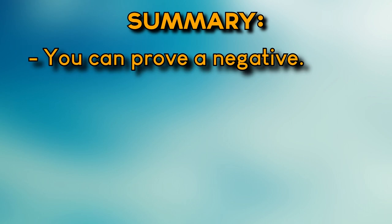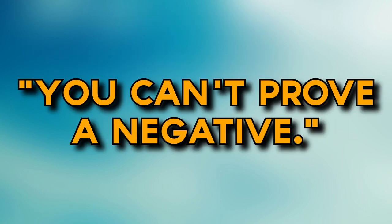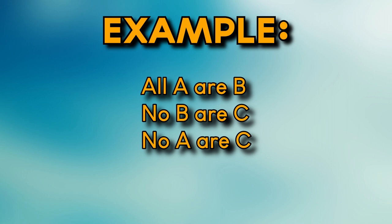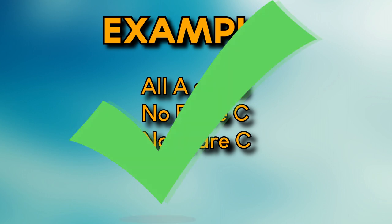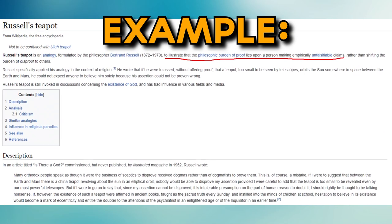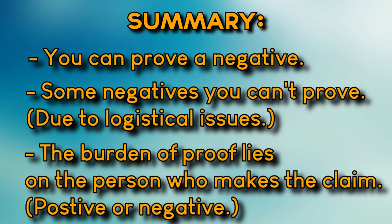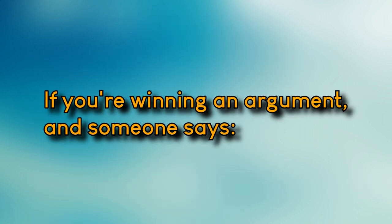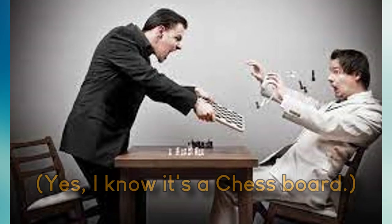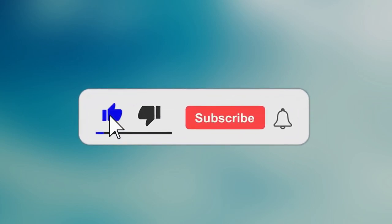In summary: you can prove a negative. The general use of this phrase out of context is just false — you can 100% prove a negative. Quick example: All A are B, no B are C, therefore no A are C — you've proved a negative deductively. Some negatives you cannot prove due to logistical issues, i.e. Russell's teapot and the uncertainty of inductive conclusions. The burden of proof lies on the person making the claim, positive or negative. If someone says 'you can't prove a negative' when losing an argument, they're wrong — and also being a coward. You should also not not be subscribed. Hit that subscribe button!